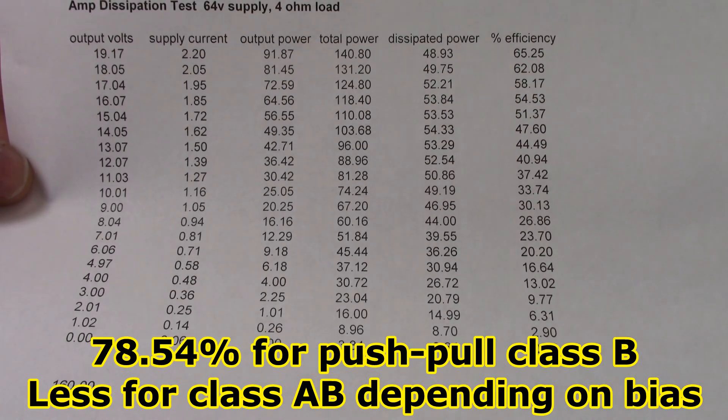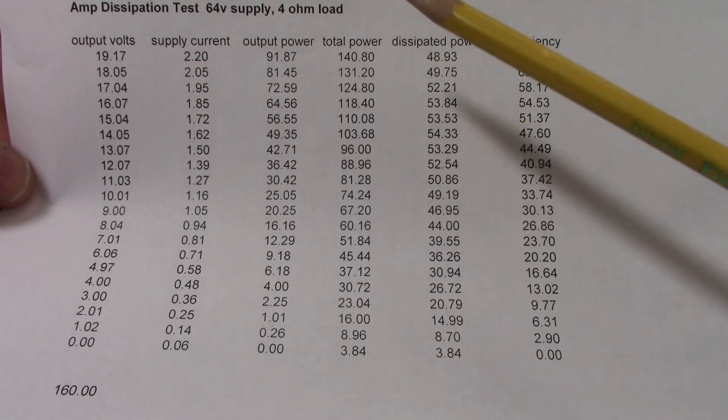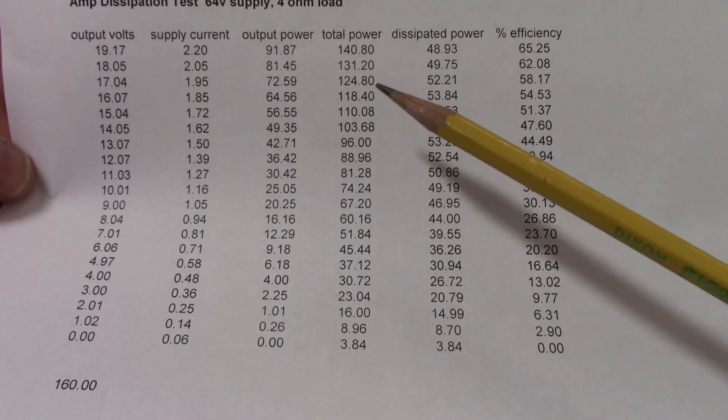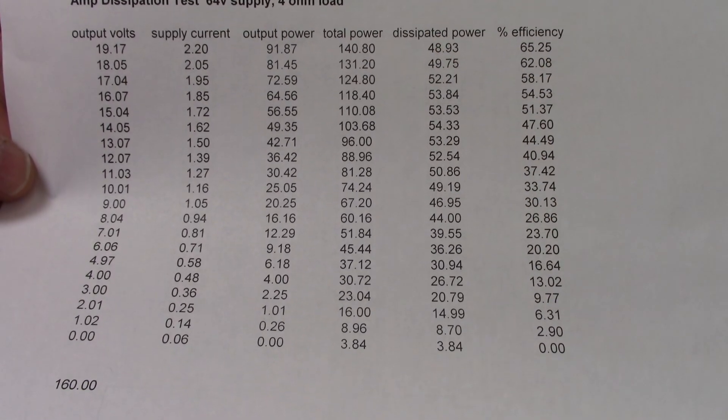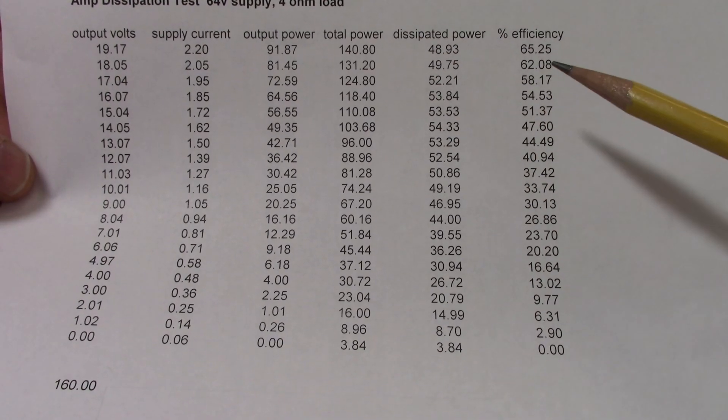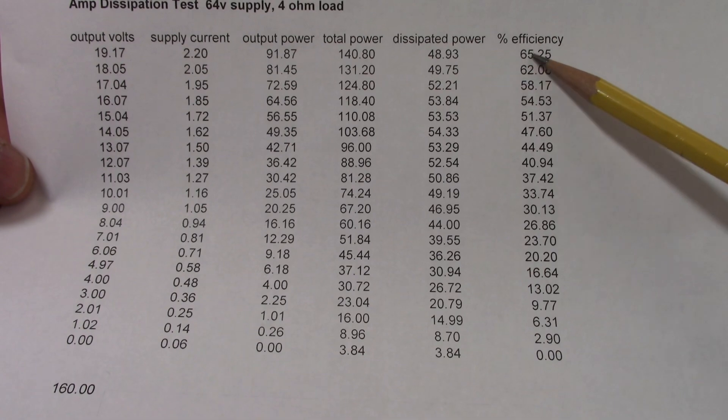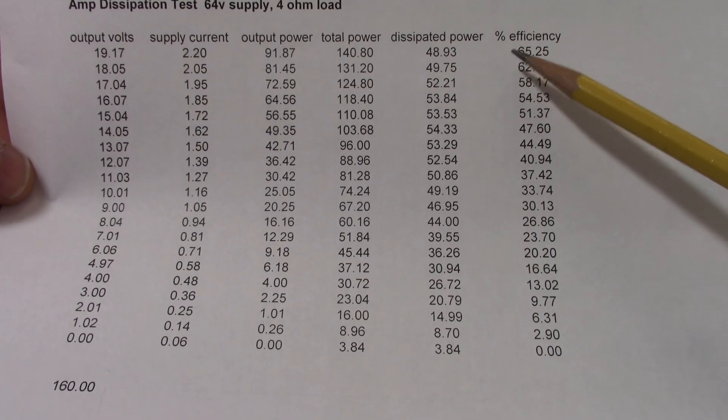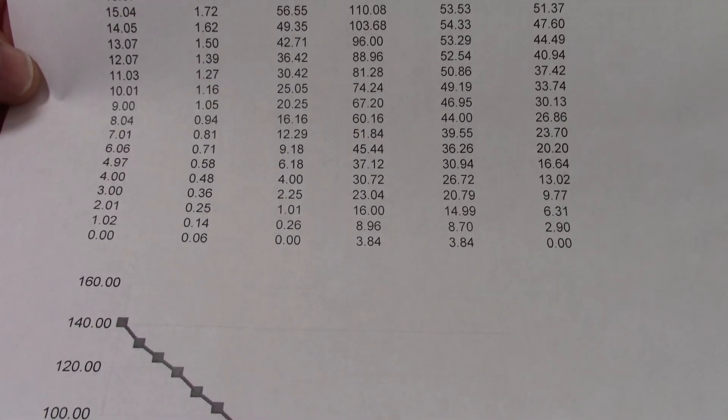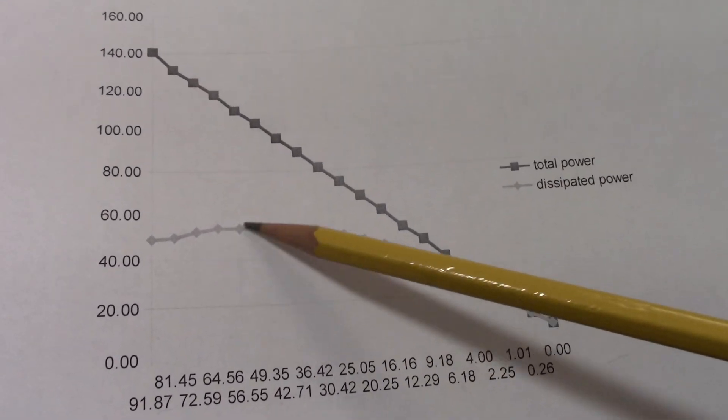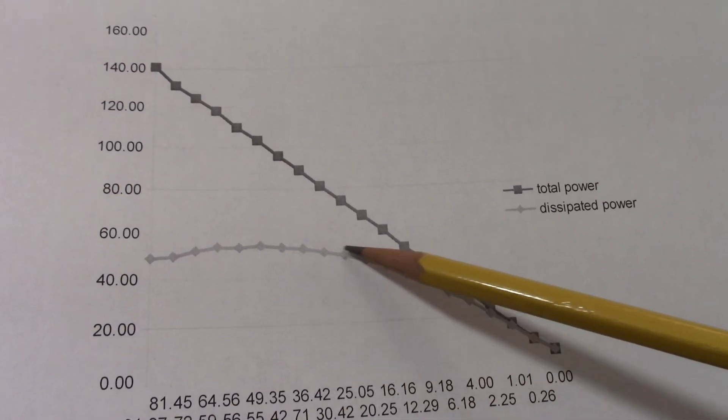And I'm using a four ohm load so that tends to draw extra current causing extra dissipation in the amplifier, especially the emitter resistors they tend to get warm and dissipate power. With an 8 ohm load I would imagine I'd get 70 maybe a little bit more than 70 percent and the peak dissipation point would shift downwards.